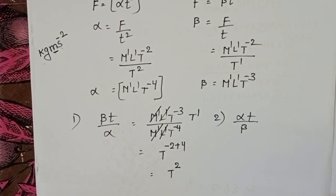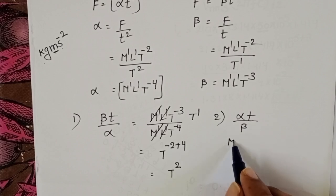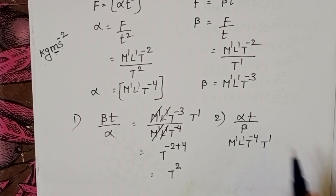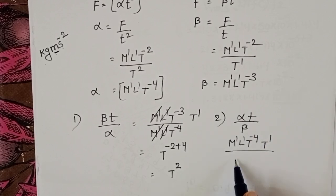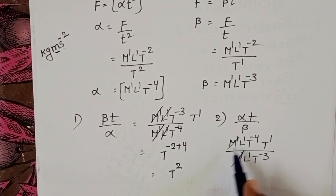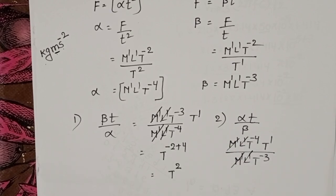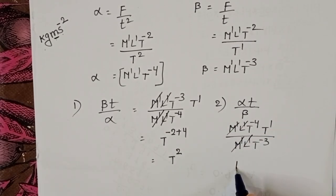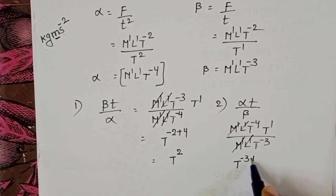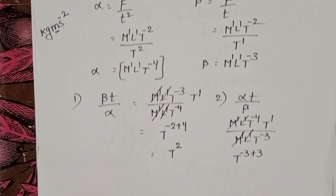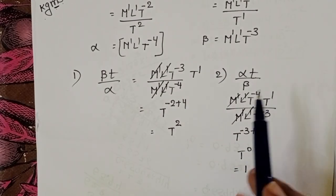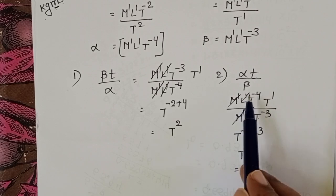Take the second option: alpha t divided by beta. Dimensions of alpha are M power 1, L power 1, T power minus 4, multiplied by T power 1, divided by beta which is M power 1, L power 1, T power minus 3. M cancels, L cancels. T power minus 4 plus 1 equals T power minus 3; divided by T power minus 3, which brings plus 3, giving T power 0 equals 1. This is a dimensionless quantity.